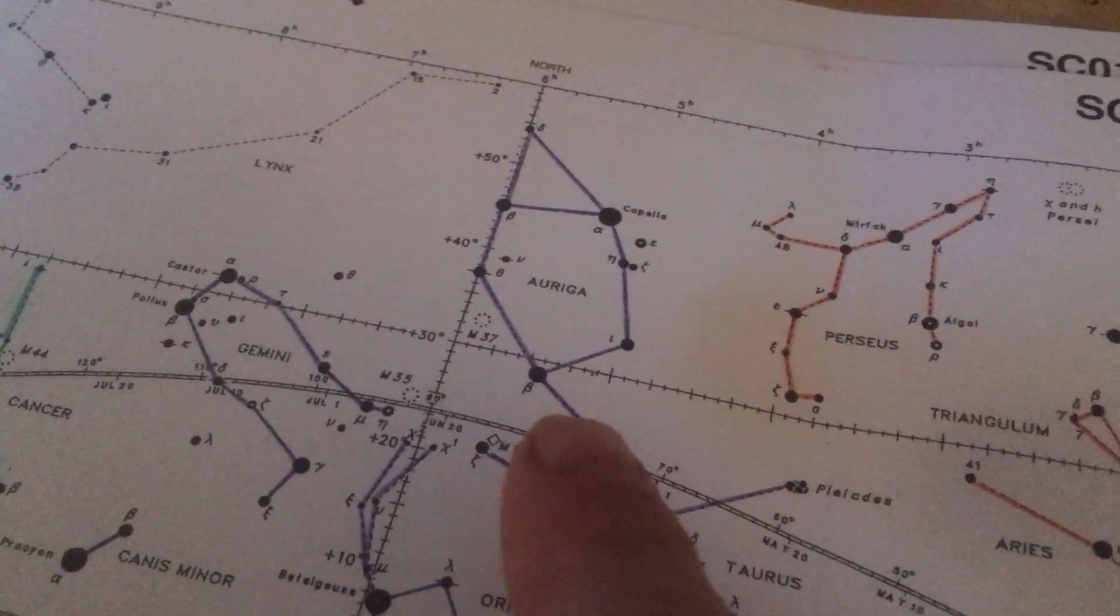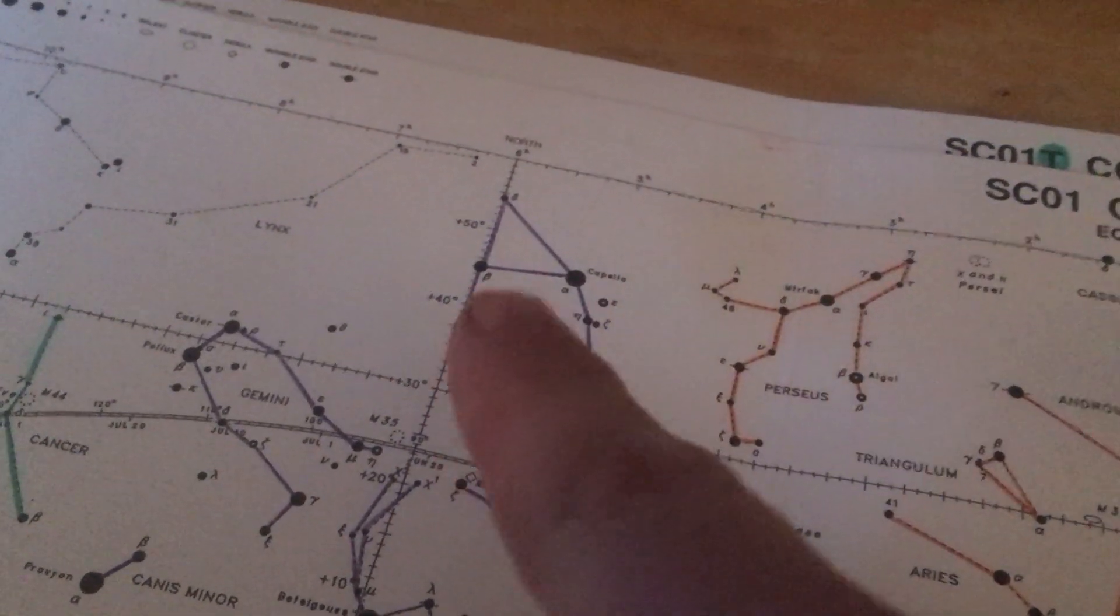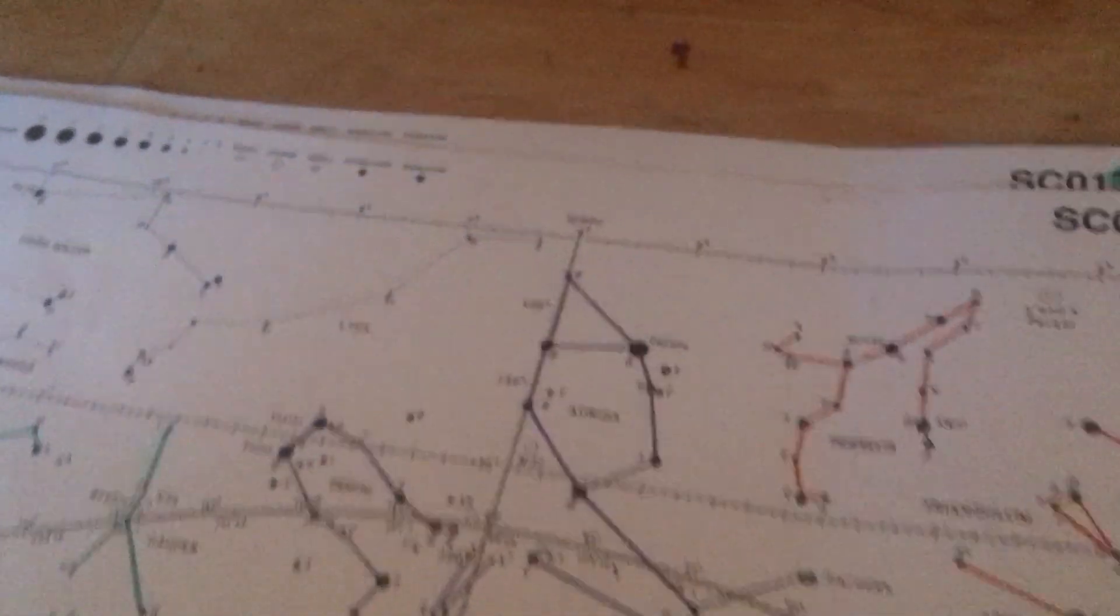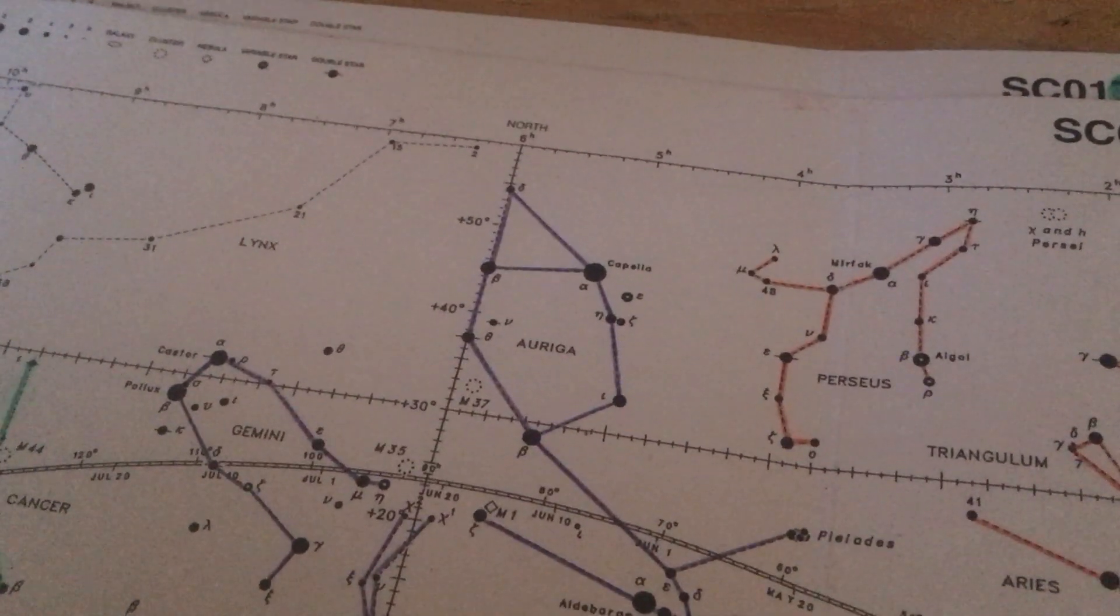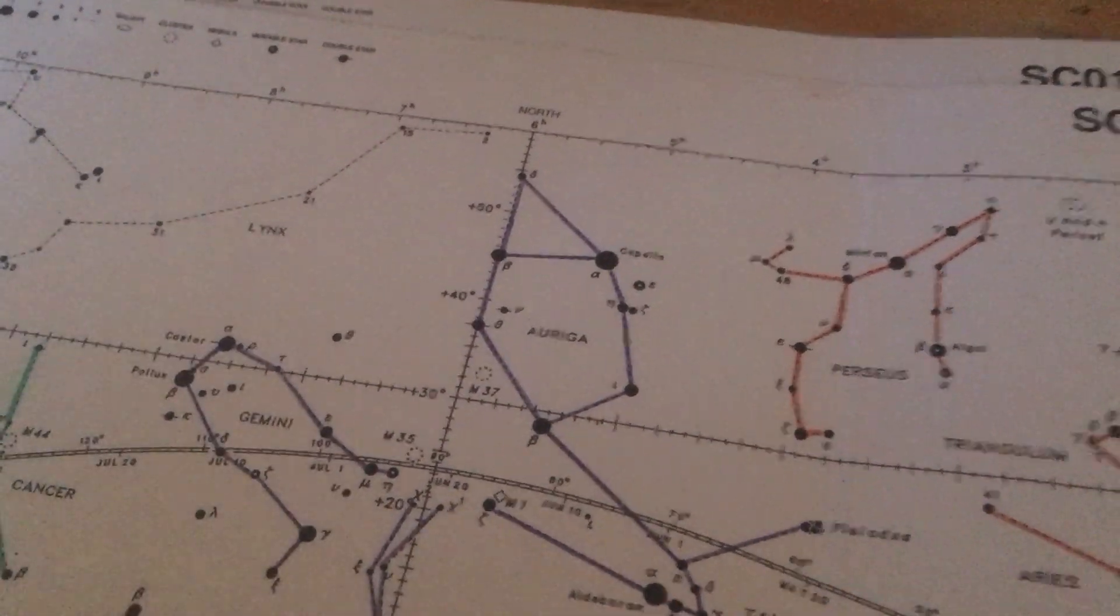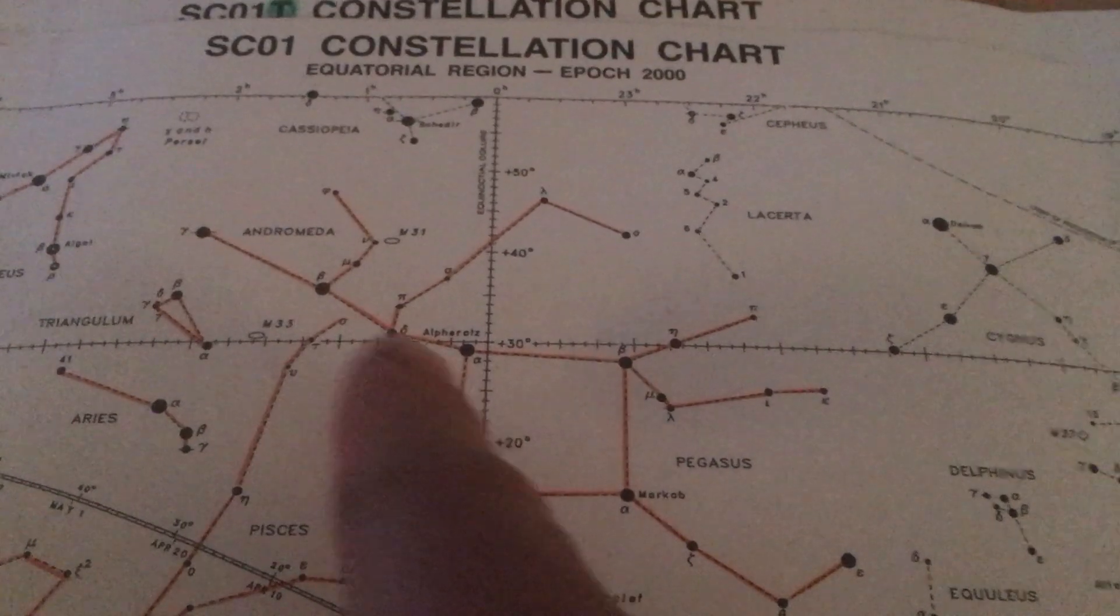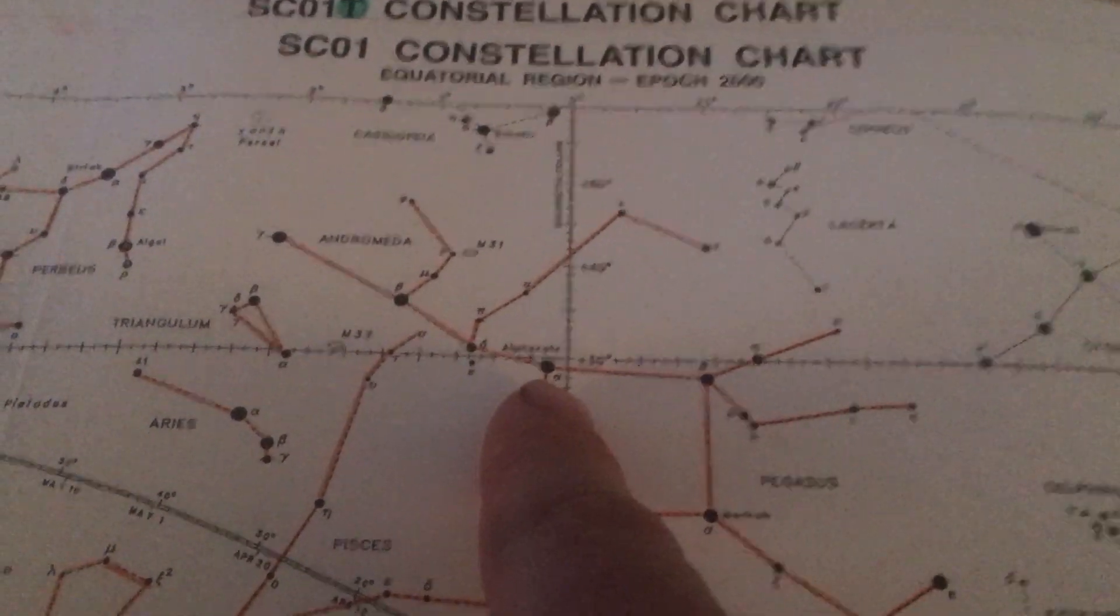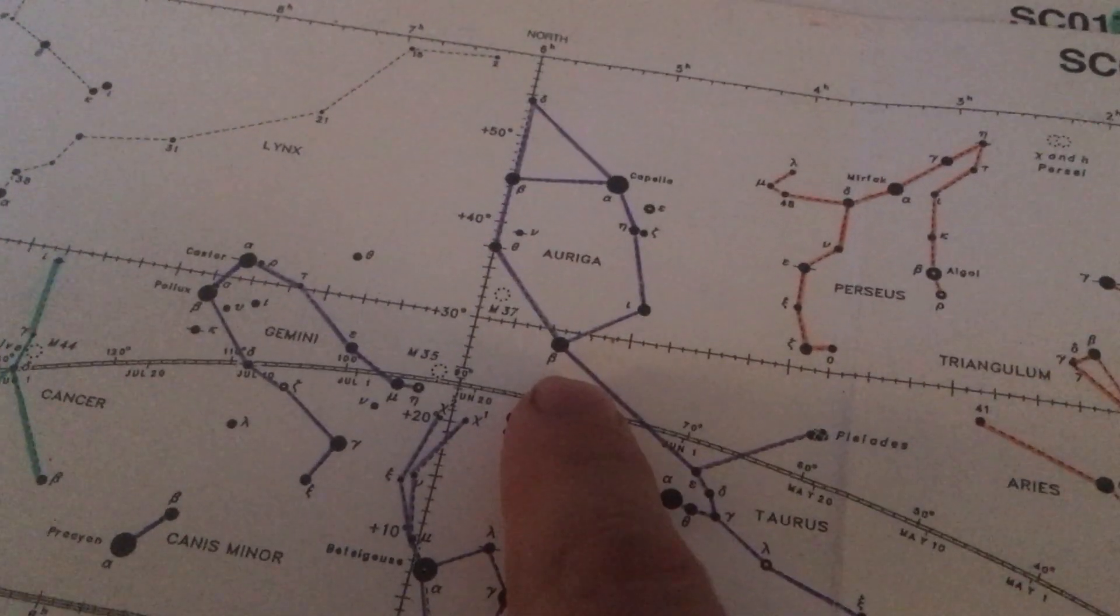Then right here, everybody, unofficially connected to the top horn, we have Auriga, the charioteer. This would have been the person driving the chariot back during the days of Roman gladiators. Now the tricky thing, just like we saw in the fall with Pegasus and Andromeda, these stick figures are unofficially connected at the top horn of the bull.